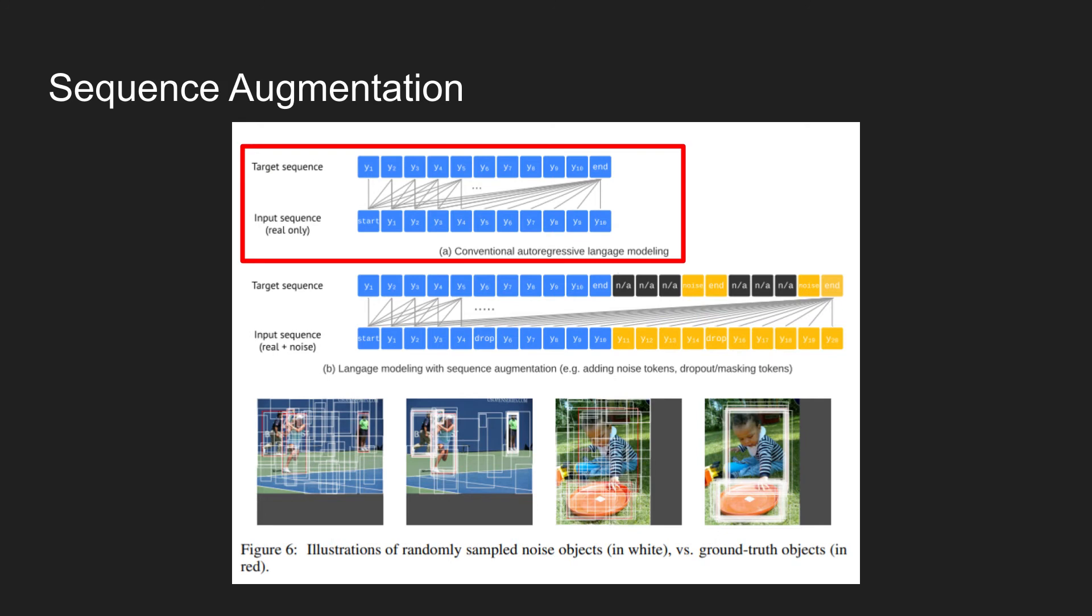Instead of having this traditional architecture, the authors augment the input sequence during training by adding synthetic noise tokens. This is shown as a yellow token in the figure. These synthetic labels are given a class of noise label and are added at the end of the input sequence. These are created either by adding noise to existing ground truth objects or generating random boxes in the background.